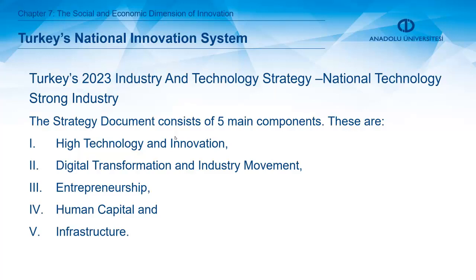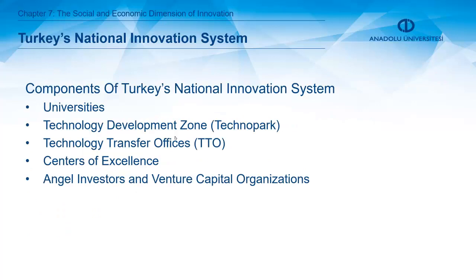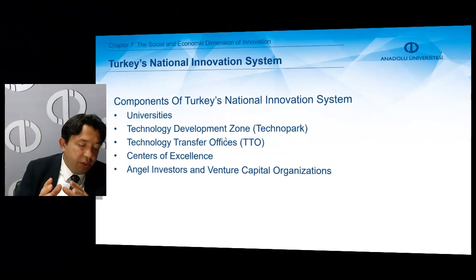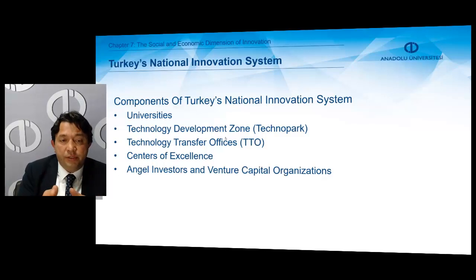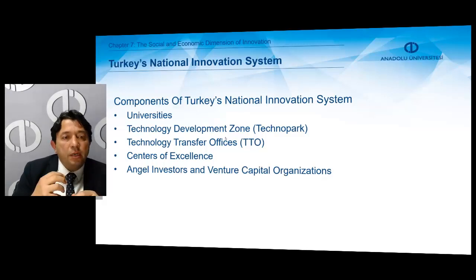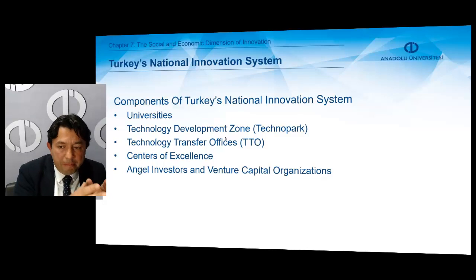This strategy document consists of five main components: high technology and innovation, digital transformation and industry movement, entrepreneurship, human capital, and infrastructure action. The components which support the innovation ecosystem in Turkey include universities, technology development zones, technology transfer offices, centers of excellence, and angel investors and venture capital organizations. More detailed definitions and figures on all these topics can be found in your chapter.